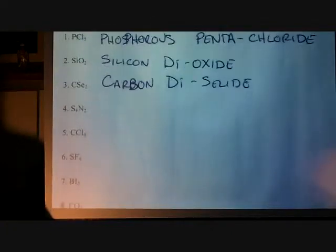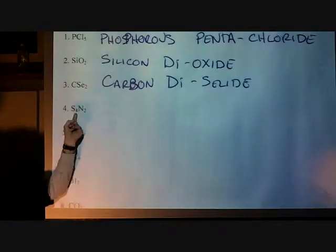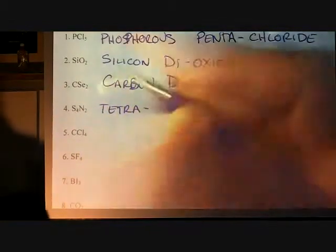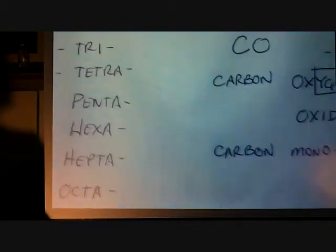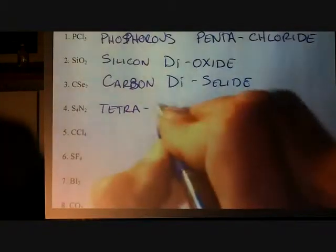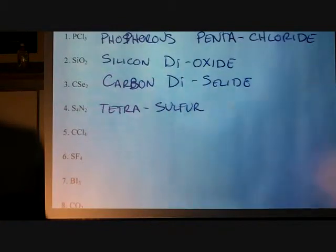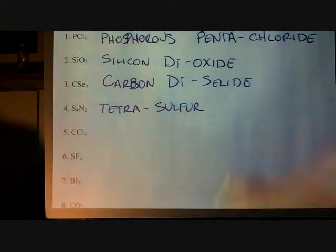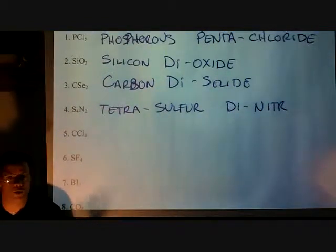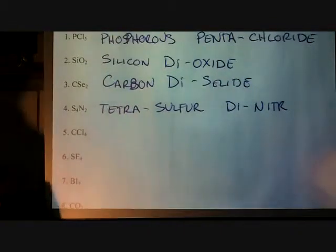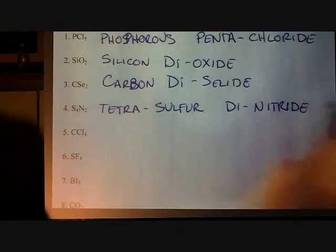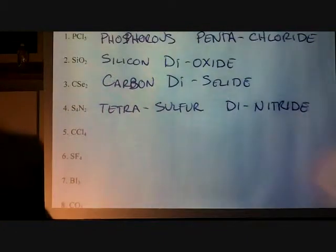Looking at number four. Now, we finally got something going on here. So, we have a subscript for our sulfur. So, that's going to be tetra. Remember, tetra represents four. And then, we're going to have tetrasulfur. And then, we have two nitrogens. So, dinitride. Nitrogen, get rid of the o-gen and put nitride. So, tetrasulfur dinitride. Isn't that cool?